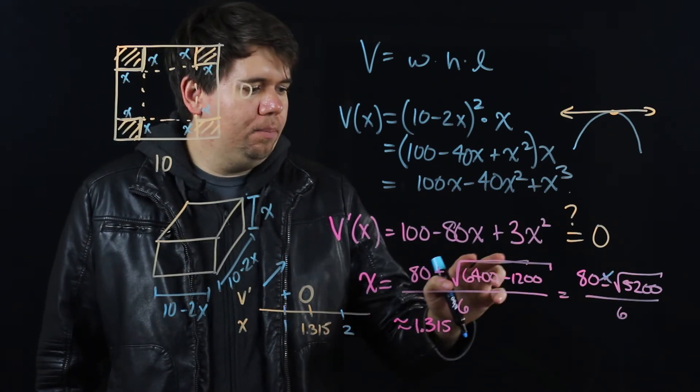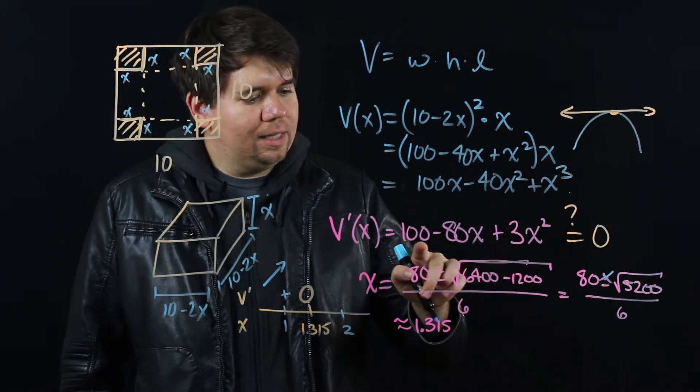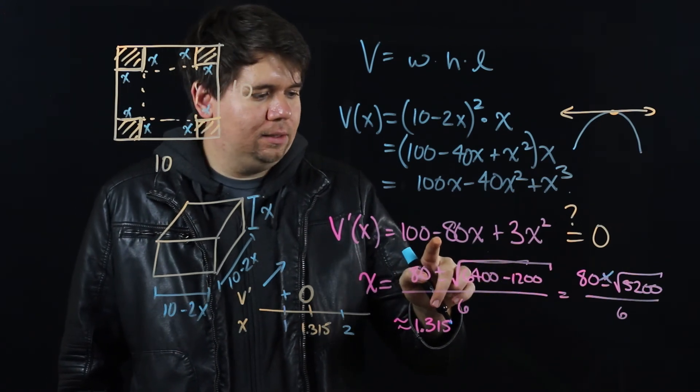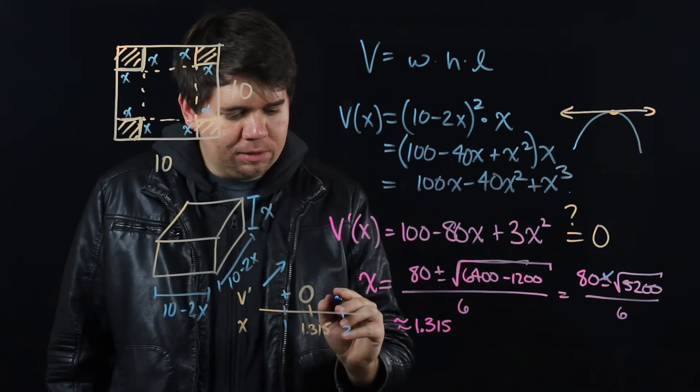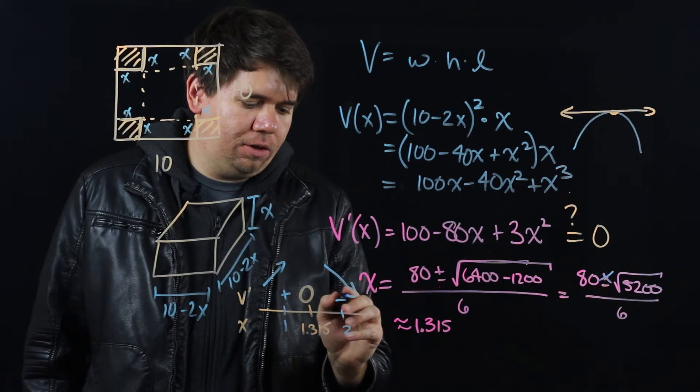If you plug in something bigger than 1.315, like say 2, plug 2 into your derivative. That's 100 minus 160, so you have negative 60 plus 12, still a negative number, so you're decreasing.